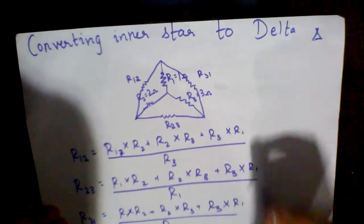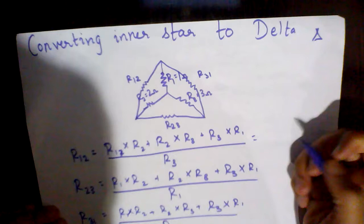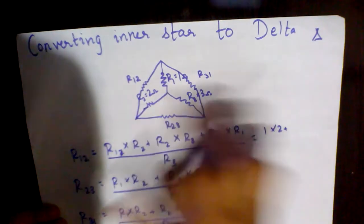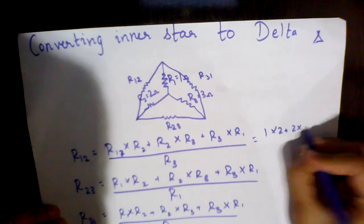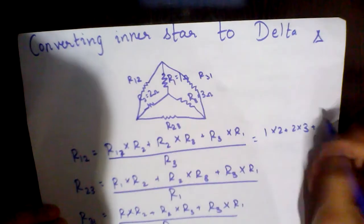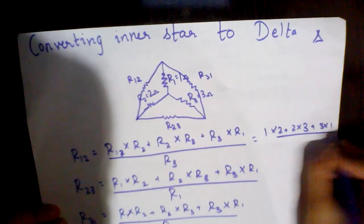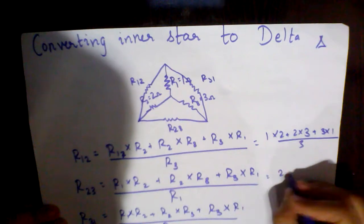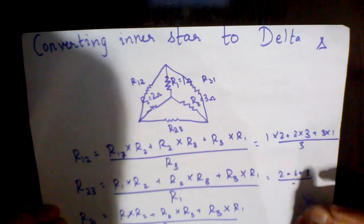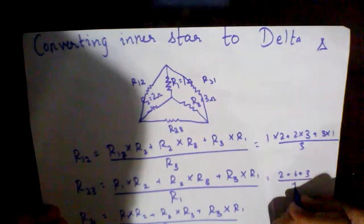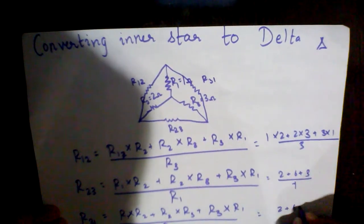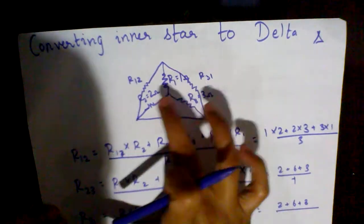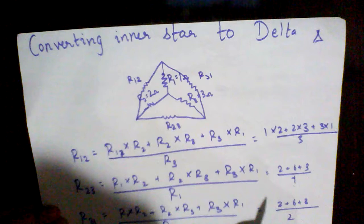Now for the calculations: 1 into 2 plus 2 into 3 plus 3 into 1, divided by R3, which is 2 plus 6 plus 3 upon 3. Similarly, 2 plus 6 plus 3 divided by R2, which is 2 ohms, gives you the other resistances.